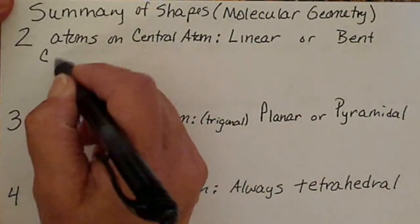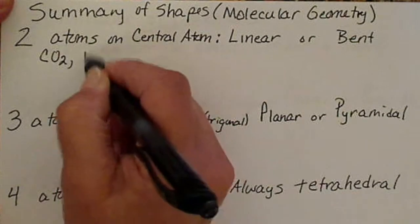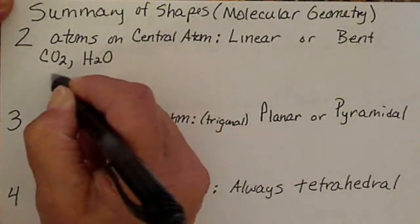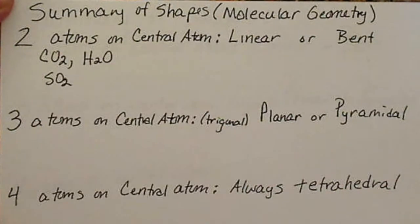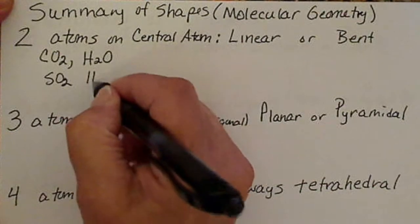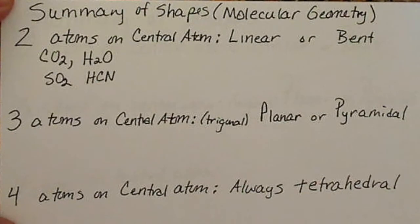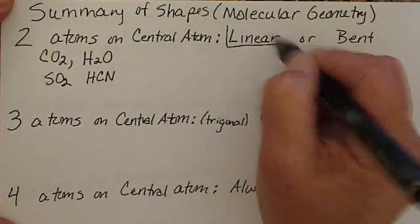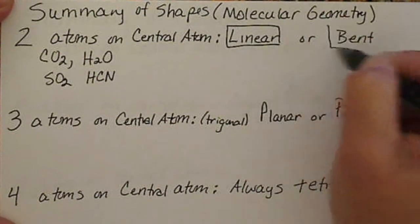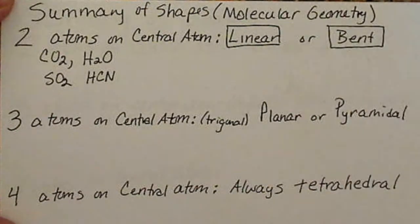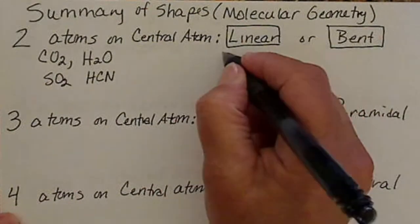If there are two atoms around a central atom, this would be for example CO2, H2O, SO2, or even something like HCN where there's only a total of three atoms. You could either have the shape linear or bent, and the shape linear is always if there are no lone pairs of electrons on the central atom.